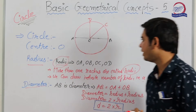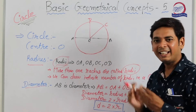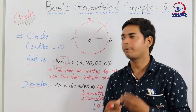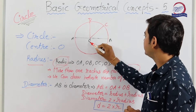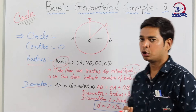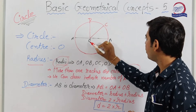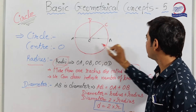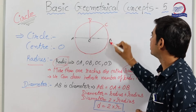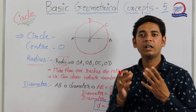Now, what is radius? Radius is a line segment joining the center of the circle to any point on the circle. The end points are: one at the center of the circle, and the other at any point on the circle. Any such line segment is said to be the radius.